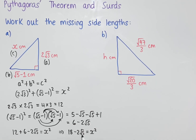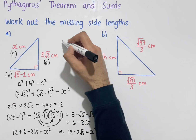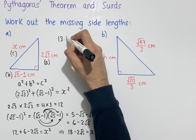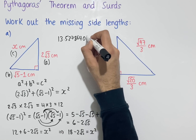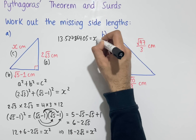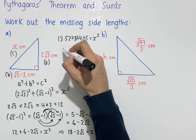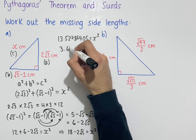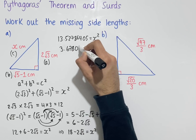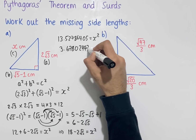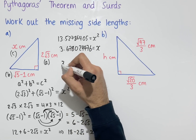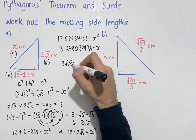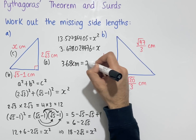18 − 2√5 is equal to approximately 13.52786405, so x² ≈ 13.52786405. Square-rooting both sides gives x ≈ 3.678024476. Rounding to three significant figures, x = 3.68 centimetres.